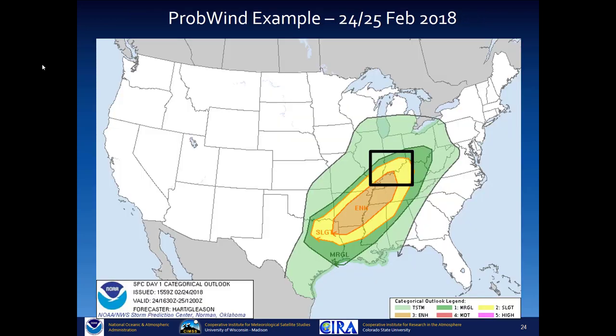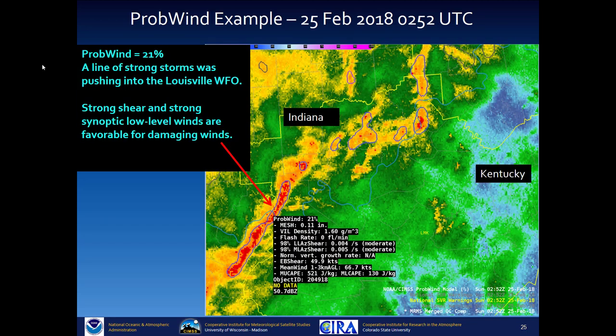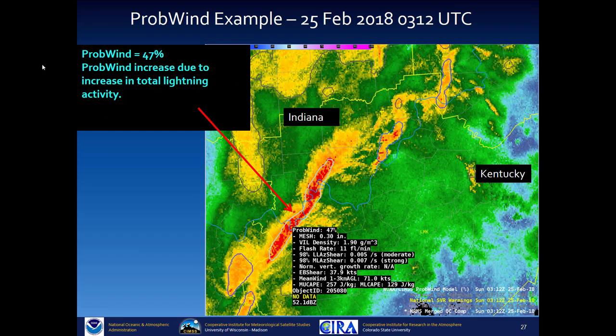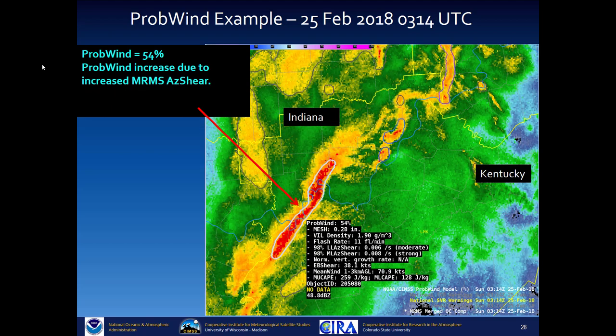Here is a PROB WIND example. At 0252 UTC, PROB WIND is 21% with a line of strong storms pushing into the Louisville WFO. There is very strong shear and strong synoptic low-level winds, both favorable for damaging winds. Eighteen minutes later, PROB WIND is at 37% as azimuthal shear and reflectivity observations intensify. Two minutes later, total lightning increases and PROB WIND rises to 47%. Two minutes after that, PROB WIND reaches 54% due to an increase in azimuthal shear.